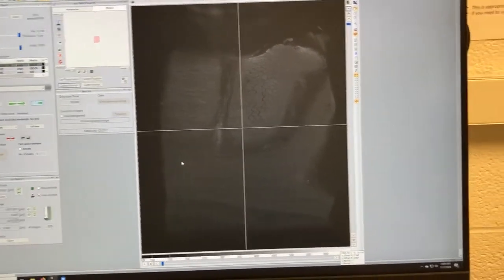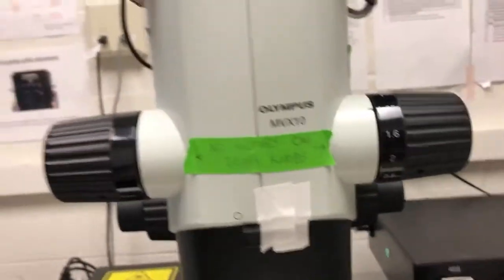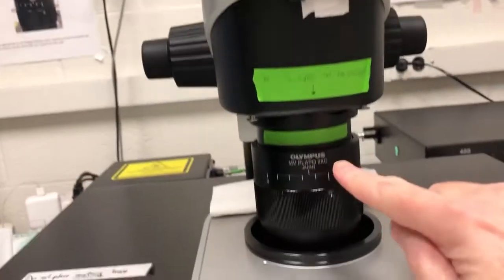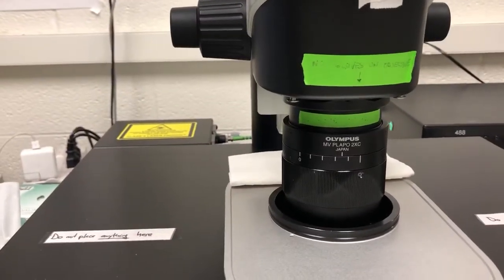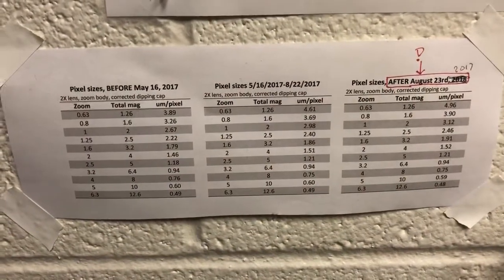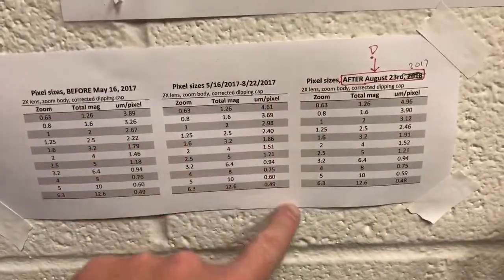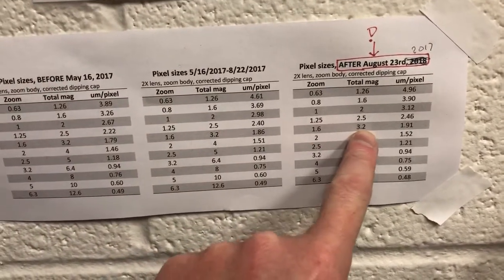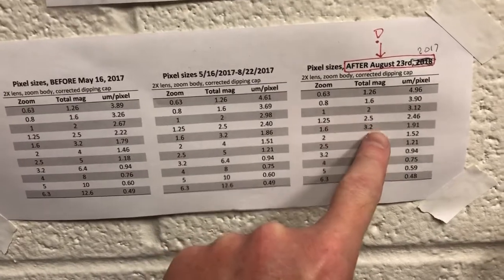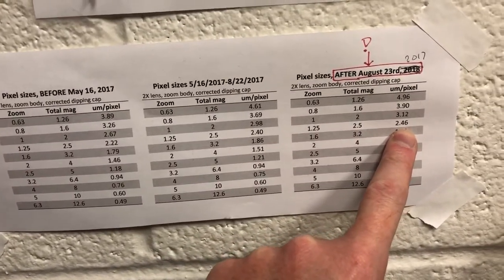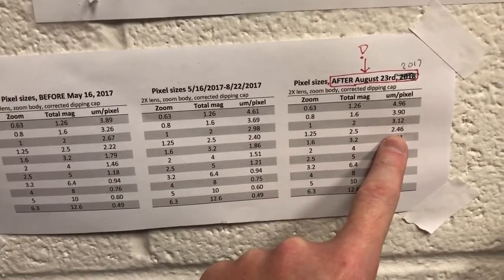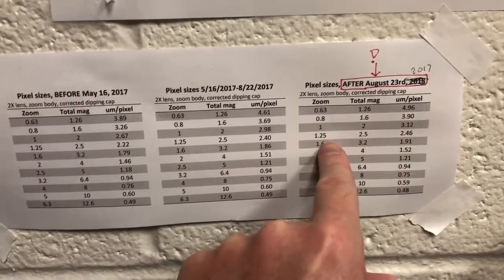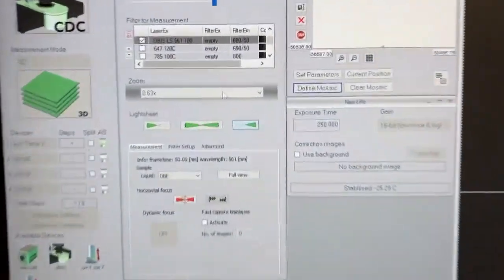That's the strategy we're going to use now. I've zoomed in by 1.25 on a 2x objective, so my effective magnification is 2.5x. More importantly than the total magnification is the pixel size. Looking at these tables of pixel sizes for different optics: with a zoom of 1.25 and magnification of 2.5x, the pixel size is 2.46 microns. Resolution on this system is roughly twice that, so I have around 5 micron resolution at that zoom in the XY dimension.